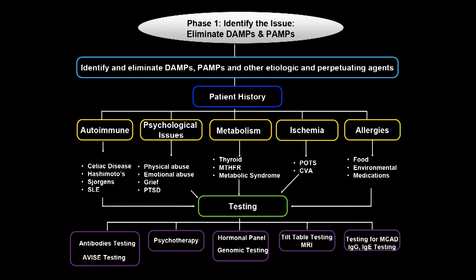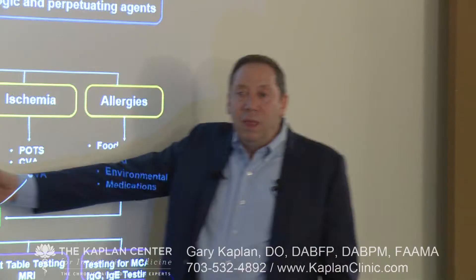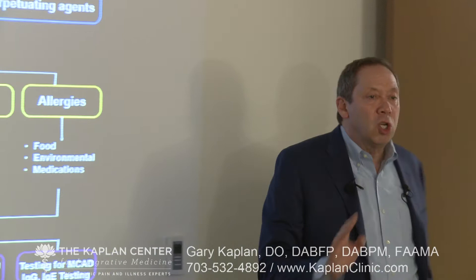Other things we need to look at: autoimmune problems — celiac disease, Hashimoto's, Sjögren's, lupus. We also need to be looking at psychological issues. If you're not willing to talk to a patient about a history of psych issues or abuse, you have no business dealing with chronic pain.